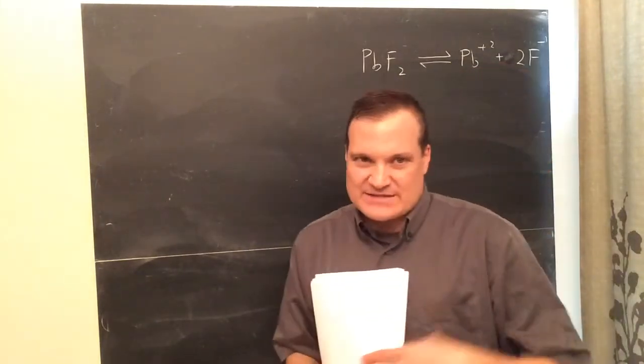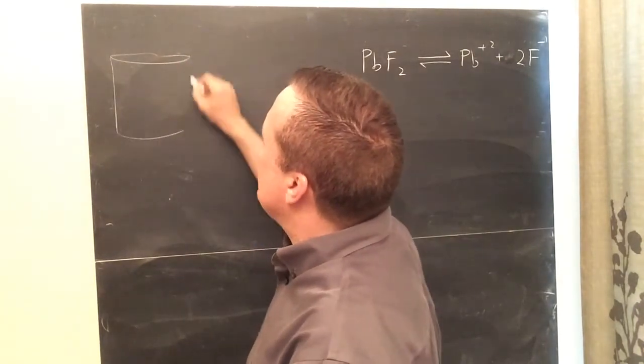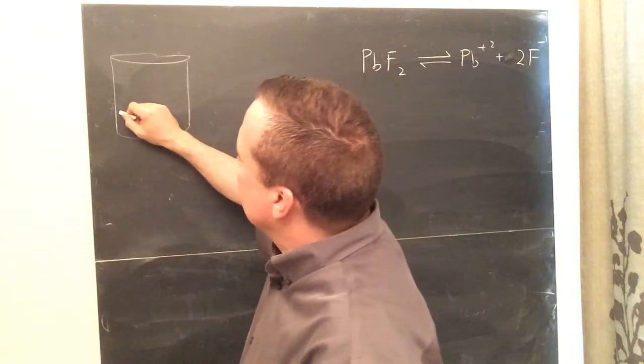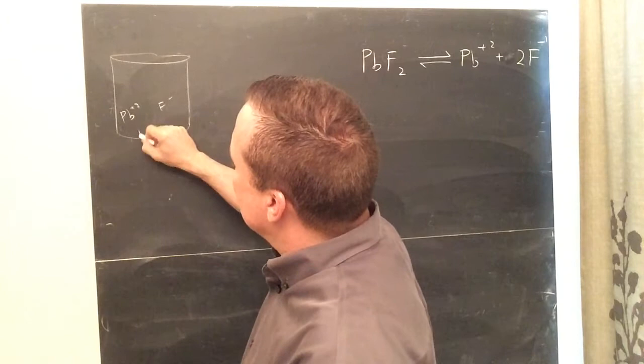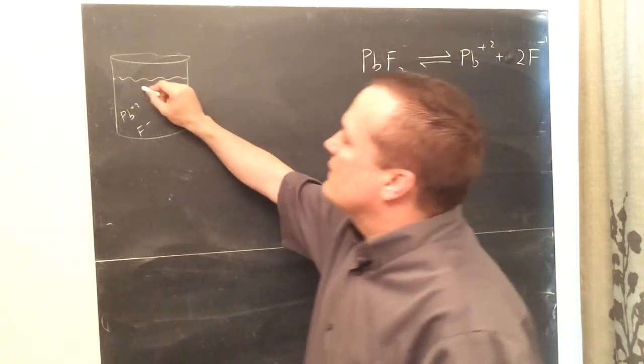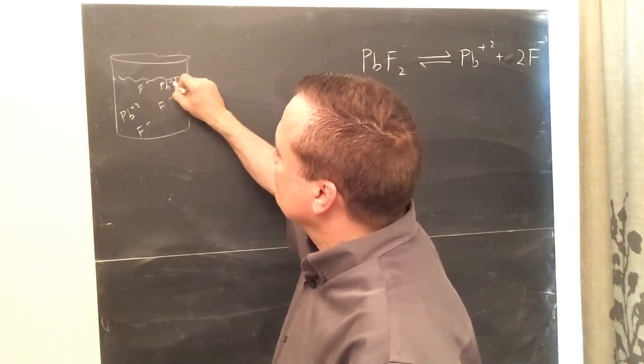If I had a glass of pure distilled water, and I put a very, very small speck of PbF2 in there, it's going to dissolve into Pb plus, F minus, F minus, you know, floating around in the water. If I put more, it will be dissolved, F minus, Pb plus two, F minus.